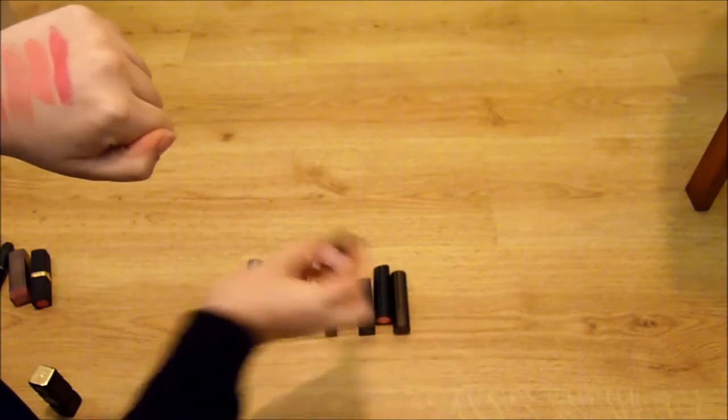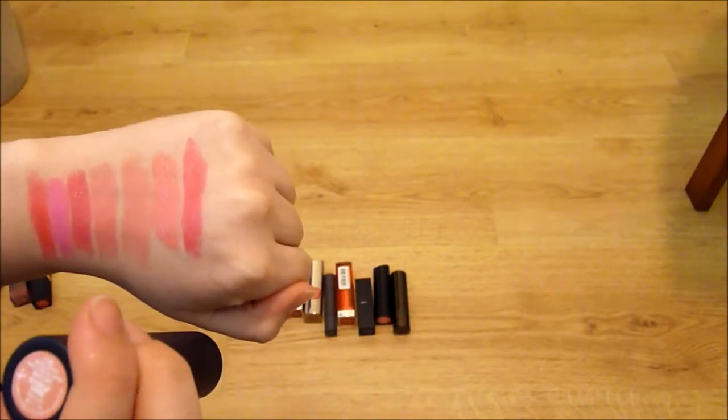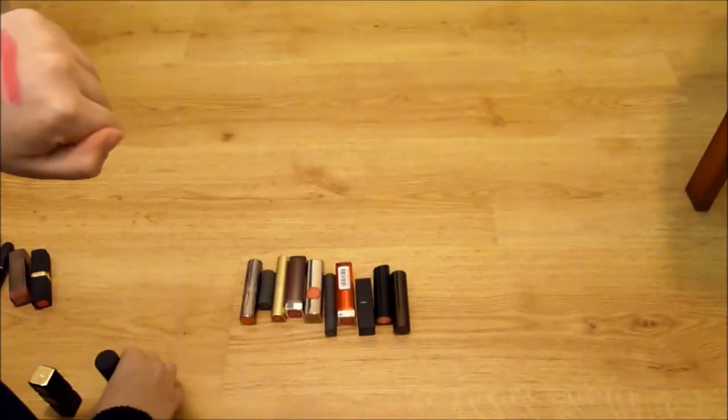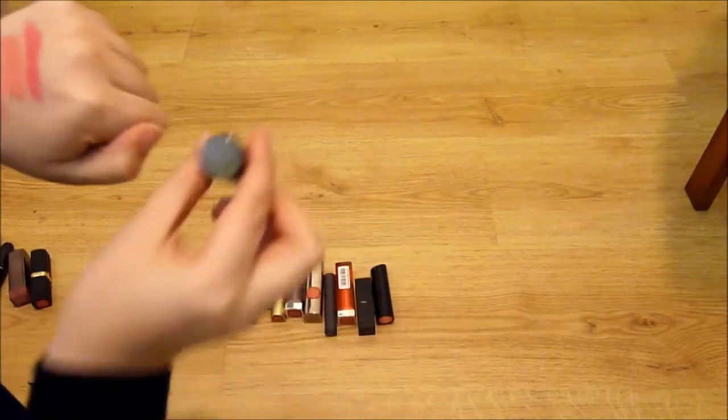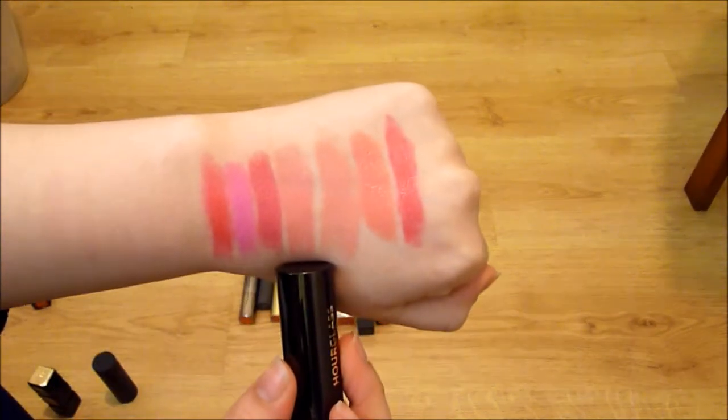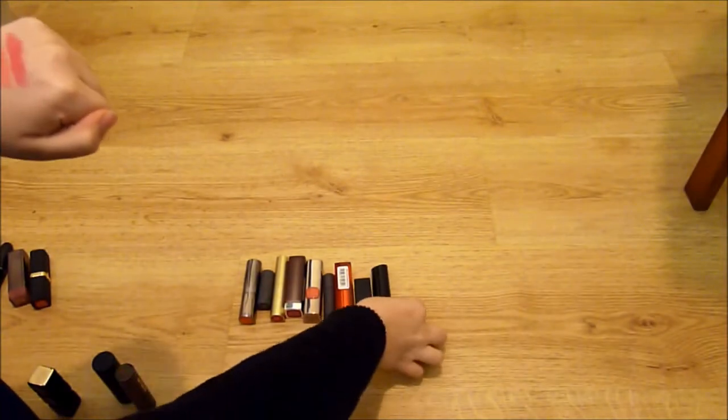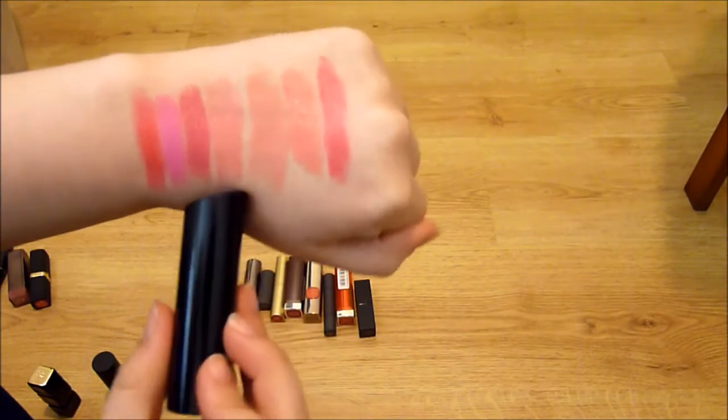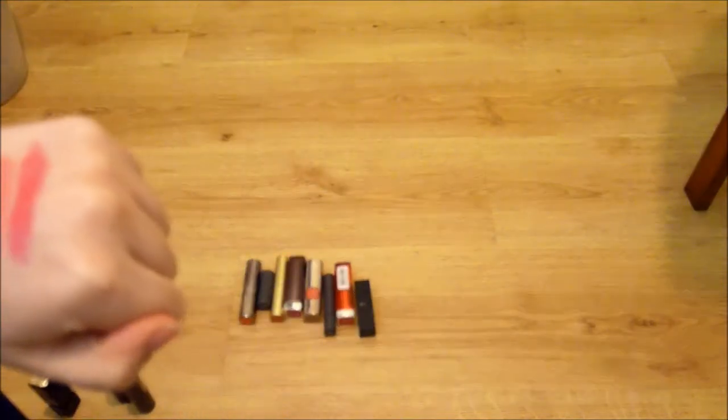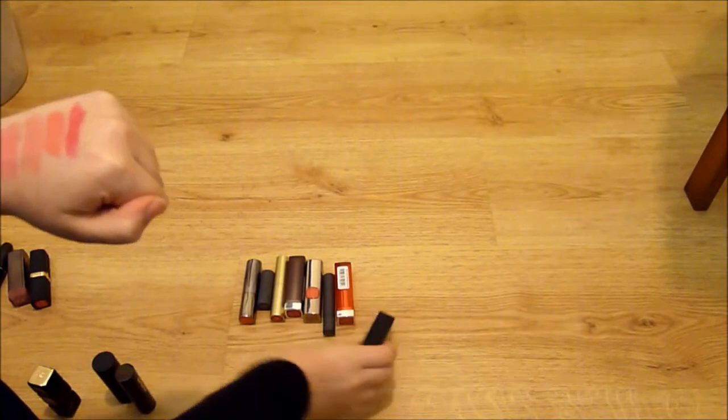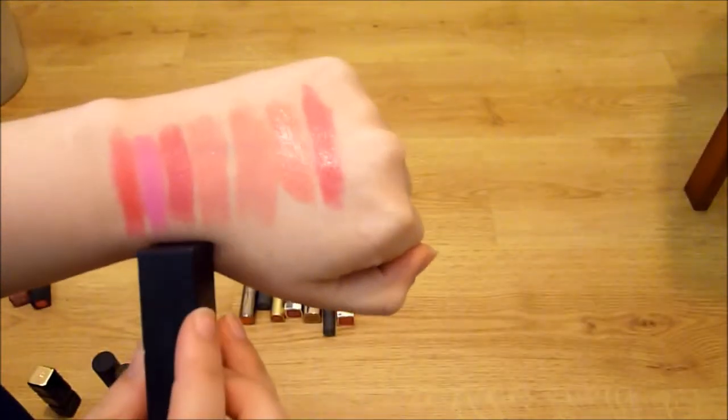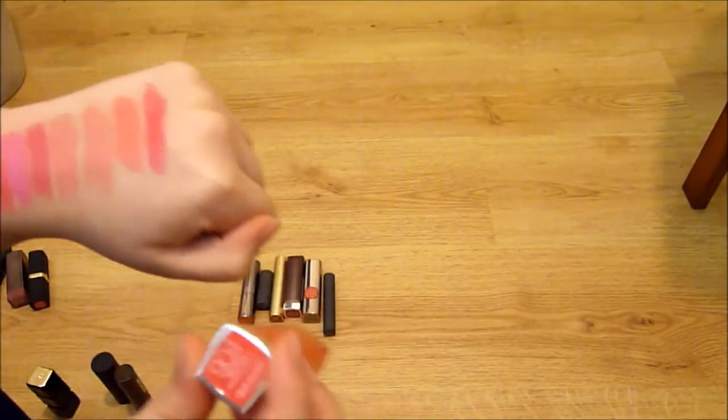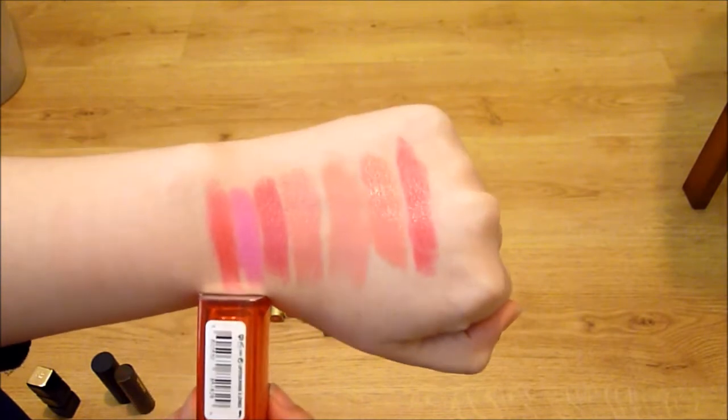I'm keeping my Buxom Naturally Daring Matte, which is this one here. And also my Hourglass Ballet, which is this one here. I'm going to pass along my Bare Minerals Moxie in Never Say Never, which is this one here. My Smashbox Magenta Matte, which is this one here. And my Maybelline Vivid Rose from the Color Vivids range.